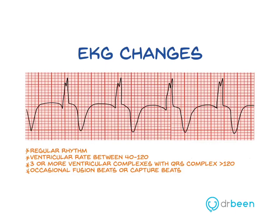EKG of AIVR shows a regular rhythm, ventricular rate between 40 to 120 beats per minute, three or more ventricular complexes with QRS complex greater than 120 milliseconds, and occasional fusion beats or capture beats.